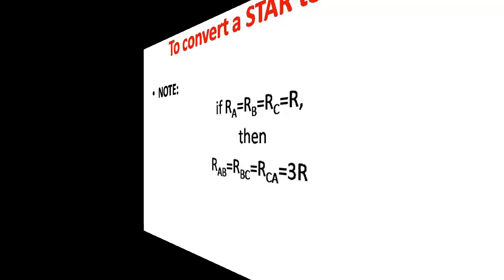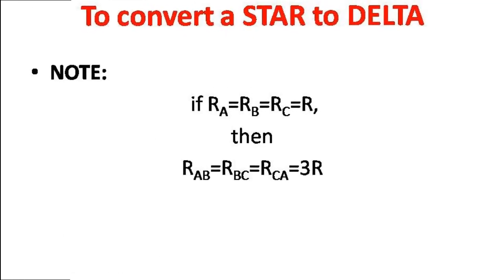We must also note that if all the resistances in the star network have the same value — if Ra = Rb = Rc = R — then Rab = Rbc = Rca = 3R.